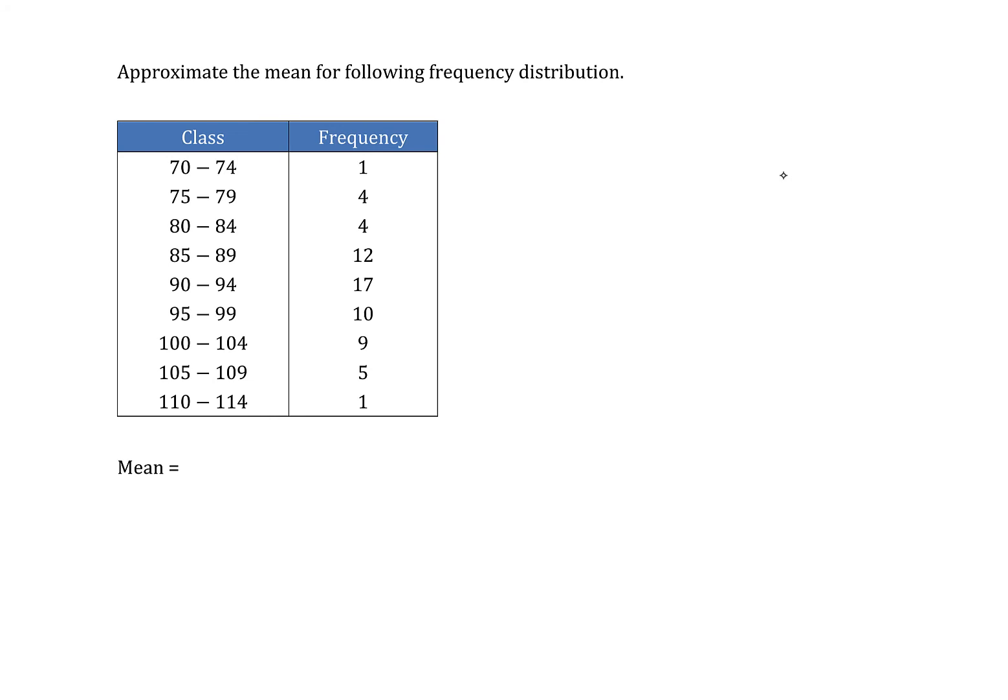Approximate the mean for the following frequency distribution. In order to do a mean here, we're in a bit of trouble because the class ranges are technically qualitative pieces of information. We have a lower bound, dash, and upper bound, and there's nothing you can do with a dash mathematically. So we need to convert it to something that is useful mathematically.